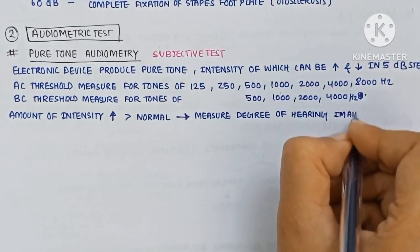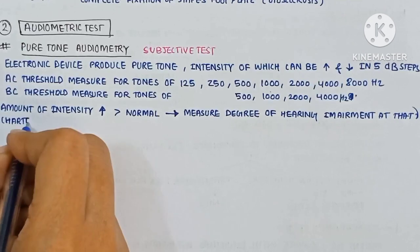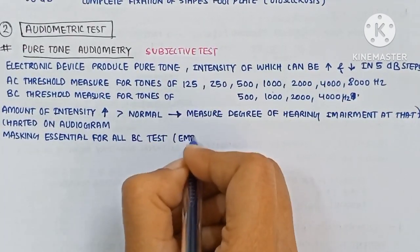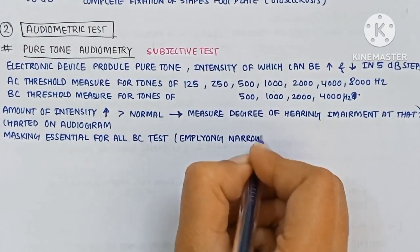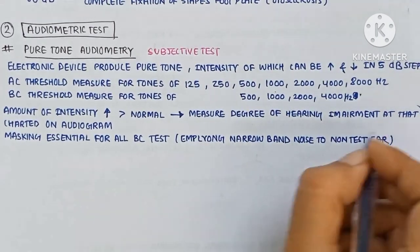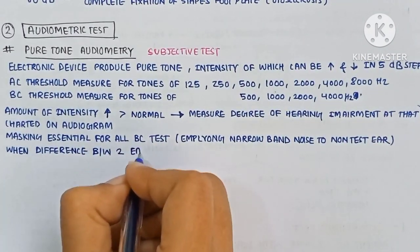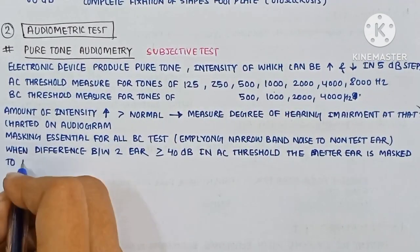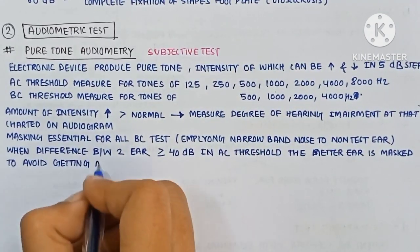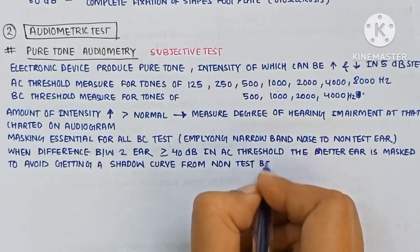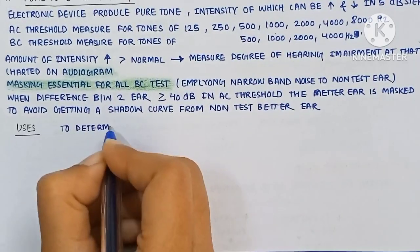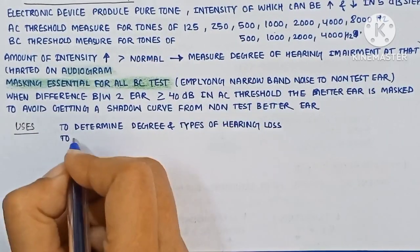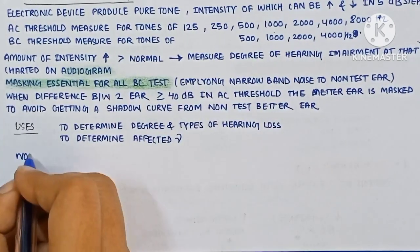The amount of intensity increase more than normal measures the degree of hearing impairment at that frequency, and it is charted on the audiogram. Masking is essential for all BC tests, employing narrow band noise to the non-test ear when the difference between the two ears is more than or equal to 40 dB in the AC threshold, to avoid getting a shadow response from the better ear. It is used to determine the degree and type of hearing loss and the affected frequency.